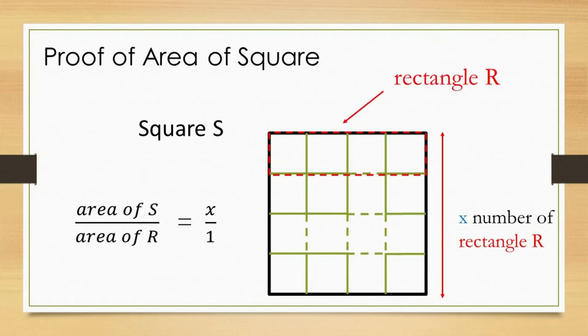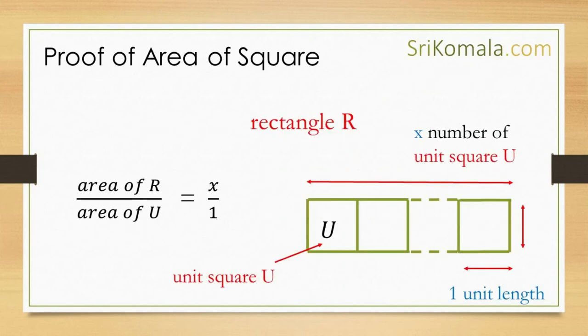Then, as can be understood from the figure, the ratio between the area of square S and the area of 1 rectangle R is x to 1. Let us call this the first ratio. Next, it can be understood from the figure that each rectangle R is consisted of x number of unit squares. Therefore, the ratio between the area of 1 rectangle R and the area of 1 unit square is x to 1. Let us call this the second ratio.